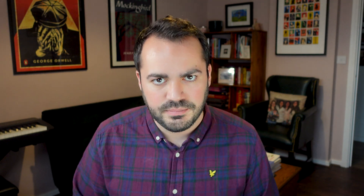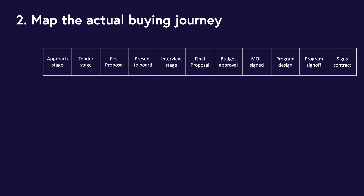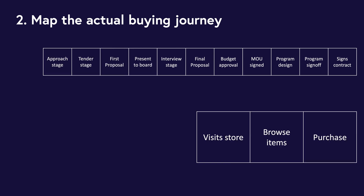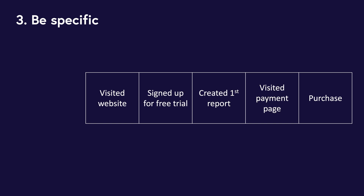Two: map and measure as many stages of the funnel as make sense to your customer's actual buying journey. You might have a buying journey with as many as 15 clear distinct stages, or you might have one with just two or three — it depends on your product and your business. Three: don't name your stages with generic words like interest or desire. Instead, tie them to your customer's actual buying experience: visited payment page, signed up for free trial, created first report. This stops us projecting our assumptions about our customers' thoughts and feelings onto these metrics, because those assumptions may be incorrect.